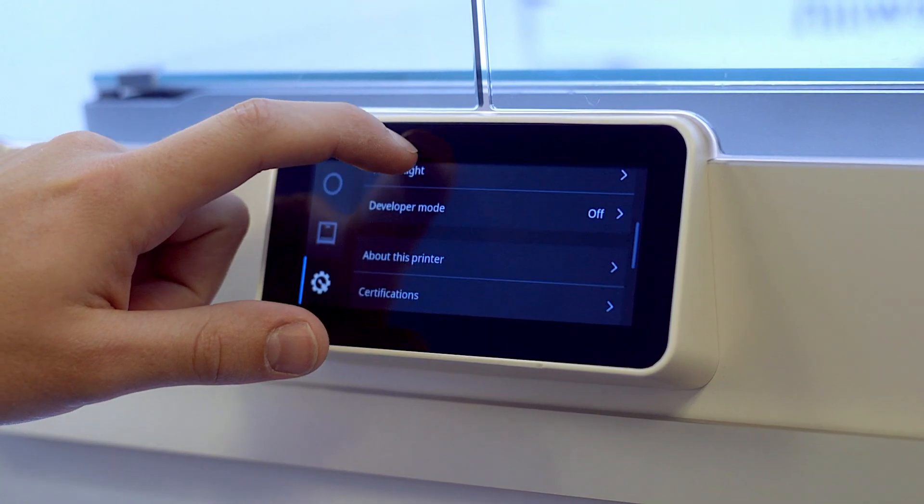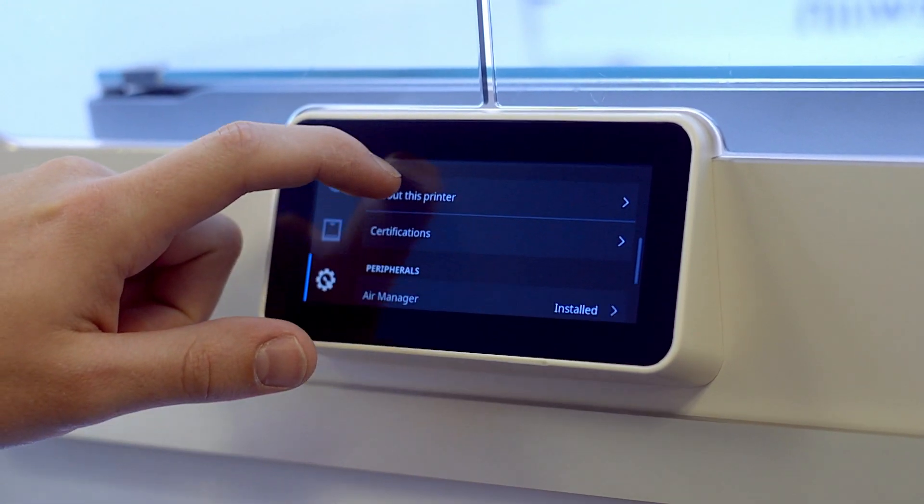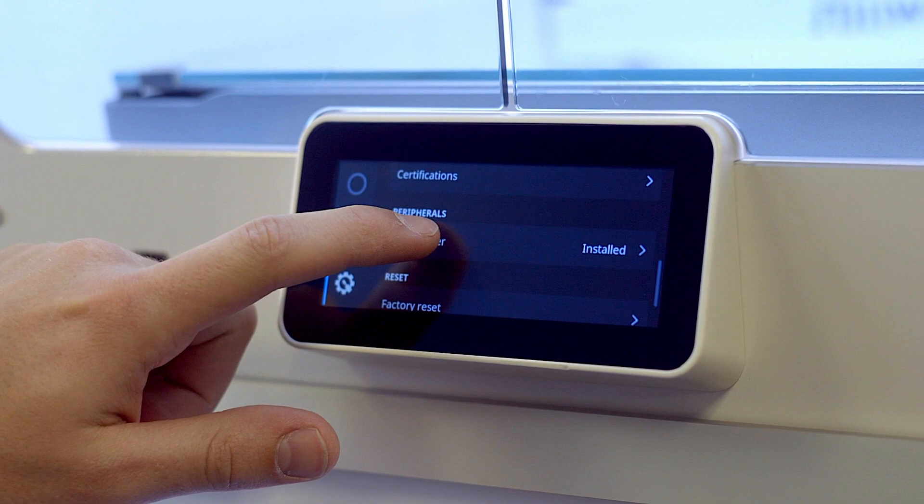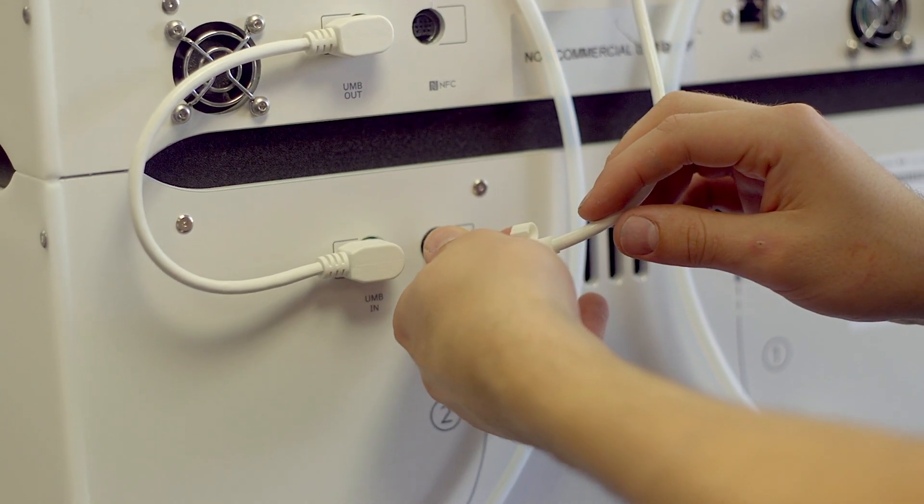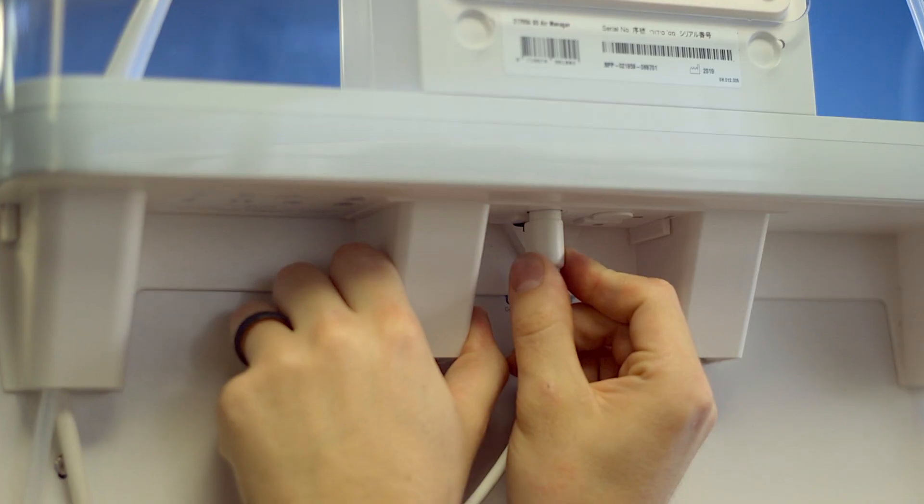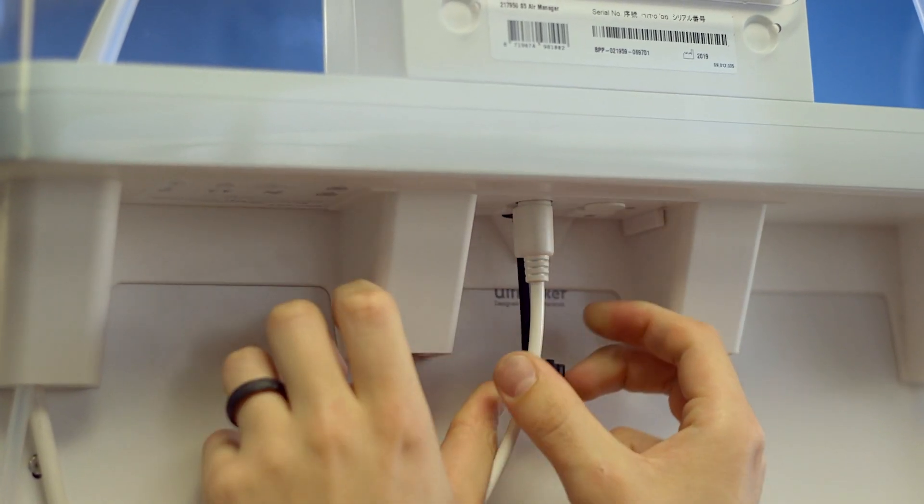Over time, the filter will need to be replaced, but the Ultimaker S5 tracks filter use and will prompt the user for replacement when the time comes. Setup is easy too, just plug it into the Ultimaker S5 and the Air Manager will be automatically detected and ready to run.